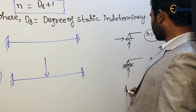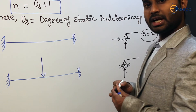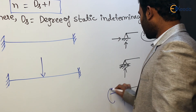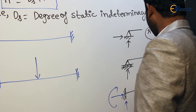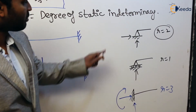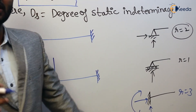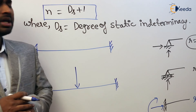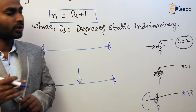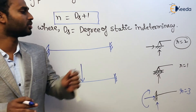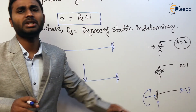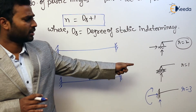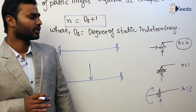Fixed support can offer how many reactions? It can offer horizontal reaction, vertical reaction, and moment — so R equals 3. For now, just remember these three basic supports. Of course there are some other supports like moment roller and others, but no need to go into those at this point. Hinged support offers 2 reactions: horizontal and vertical. Roller support offers only 1 vertical reaction. Fixed support offers 3 reactions.